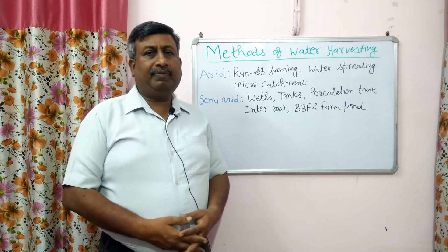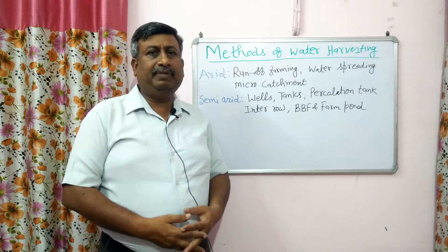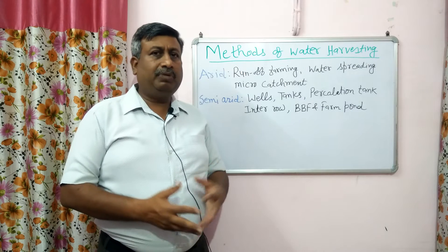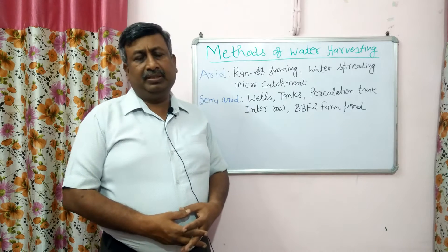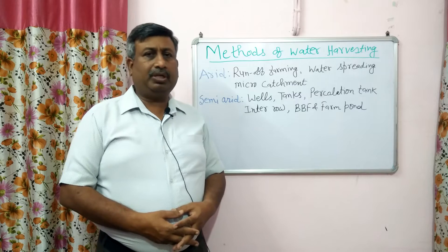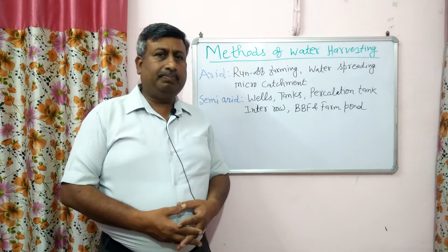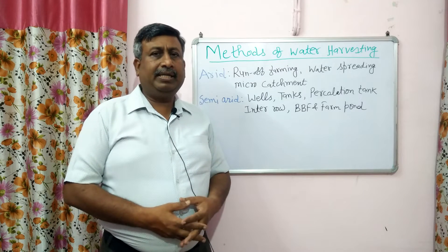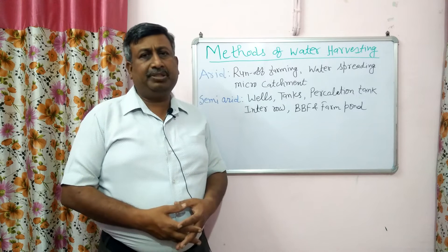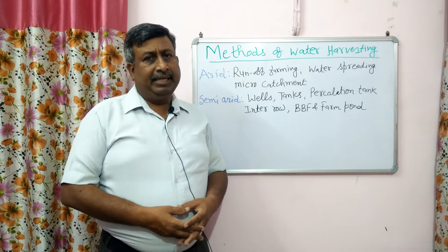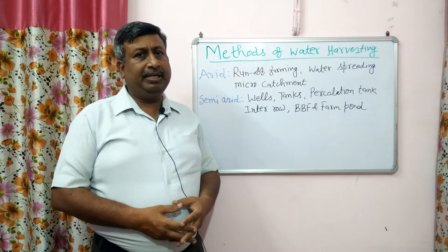These different types of water harvesting are applicable in different situations. Water harvesting is done in arid and semi-arid regions where rainfall is scanty and not sufficient to meet crop water requirements. That's why we collect and store water for future purposes like irrigation. In high rainfall areas with shallow water tables or canal irrigation, there is no irrigation problem.